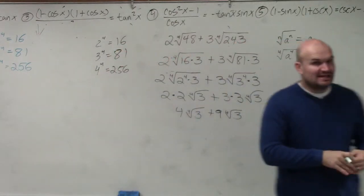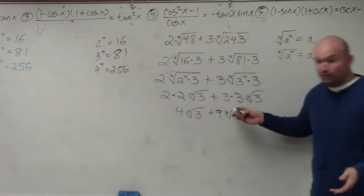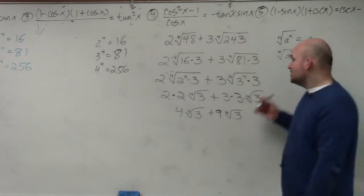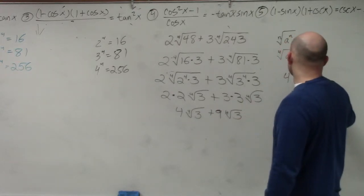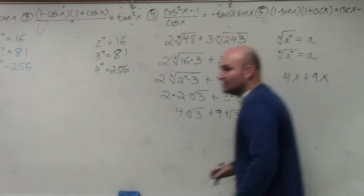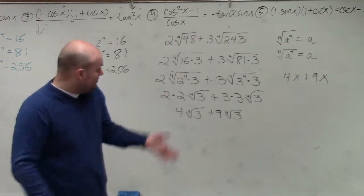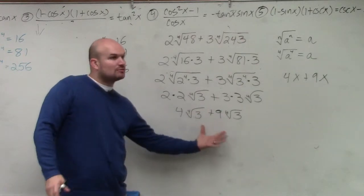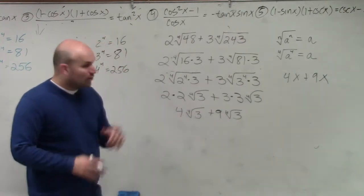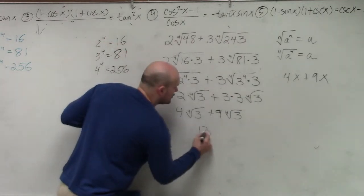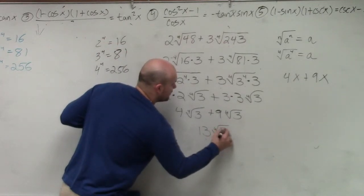I have 4 fourth root of 3 plus 9 fourth root of 3. So now what you guys can see is that my index, which is the fourth root, and my radicand, which is 3, is exactly the same. So therefore, I can just treat them just like variables. You're going to add your coefficients, and then keep the variable the same. You're going to add your coefficients and keep the radical the same. So 4 fourth root of 3 plus 9 fourth root of 3 is just going to be 13 fourth root of 3.